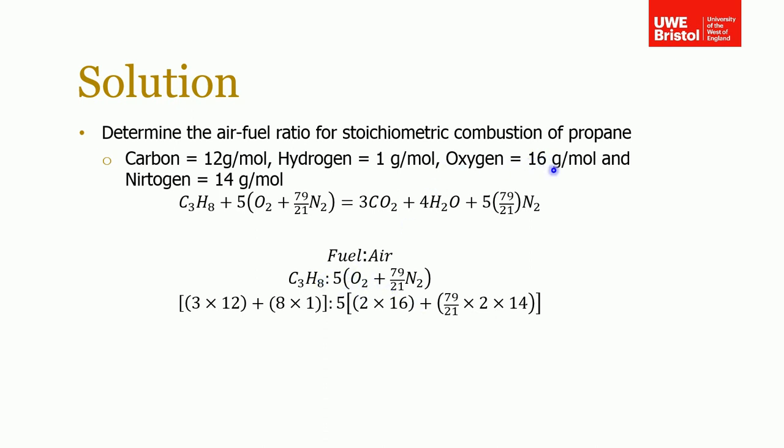Remember that one oxygen atom weighs 16 grams, so you've got two of them here—don't forget 2 times that. If you put that into your calculator and factor it out, you end up with an air-to-fuel ratio of 15.6 to 1. In other words, you need about 15.5 kilograms of air for one kilogram of propane for complete combustion.